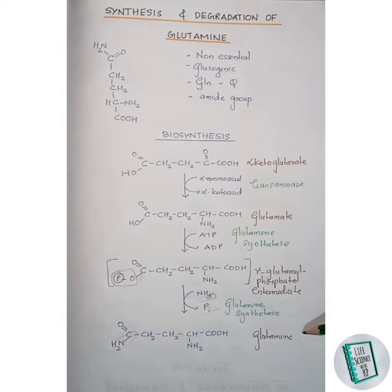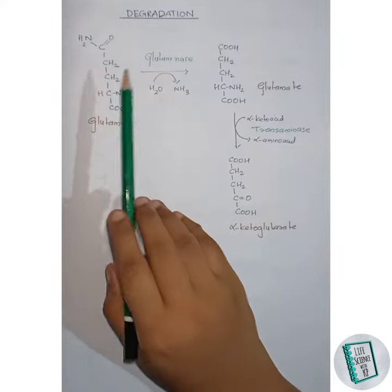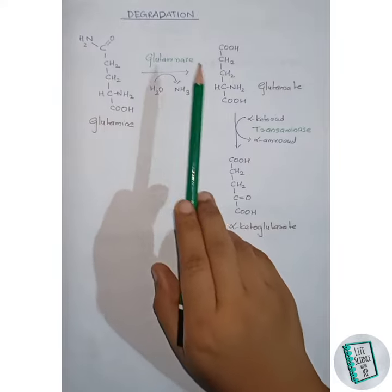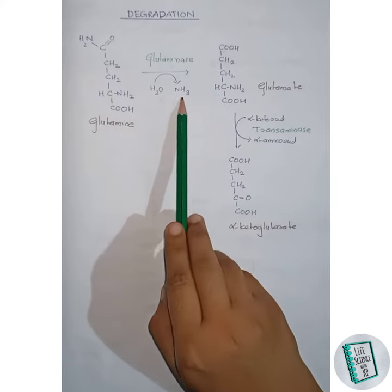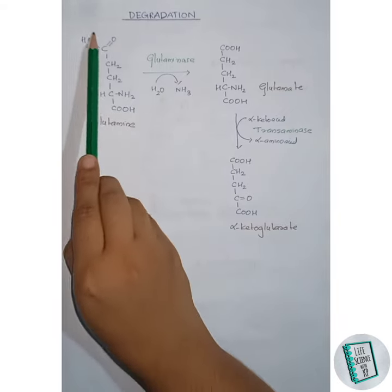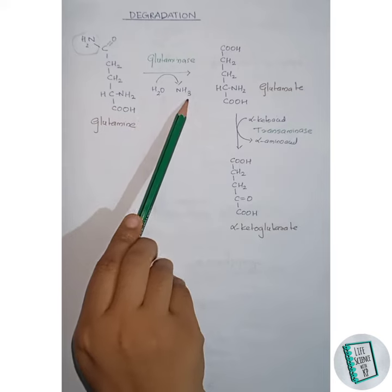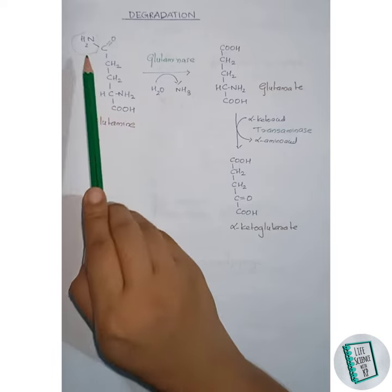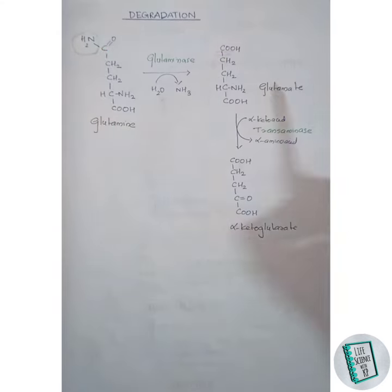This is all about the biosynthesis of glutamine. Now let us move on to the degradation of glutamine. Glutamine degradation starts with glutamine being converted to glutamate in the presence of glutaminase. Here, by the addition of water, an NH3 molecule gets released — this NH2 along with one hydrogen of the water molecule is released as NH3, and the remaining OH of the water molecule attaches to this carbon to form the COOH group. Thus glutamate is formed.